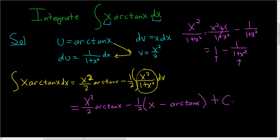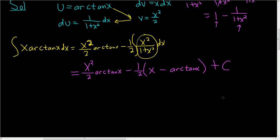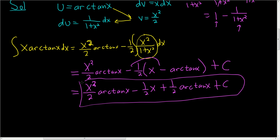Let's go ahead and maybe distribute the 1 half. So this is equal to x squared over 2, arctan x minus 1 half x plus and then 1 half arctan x plus c. So minus and minus is plus. So I hope that made sense.